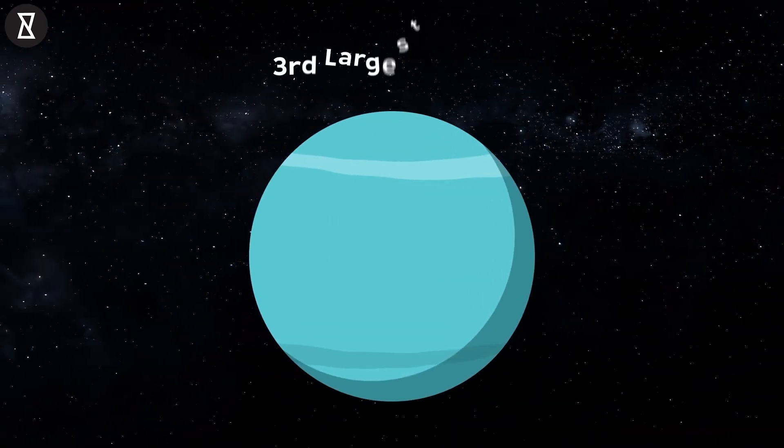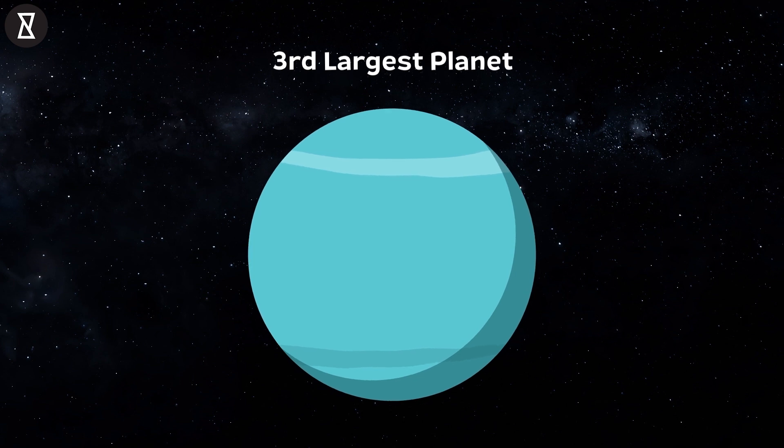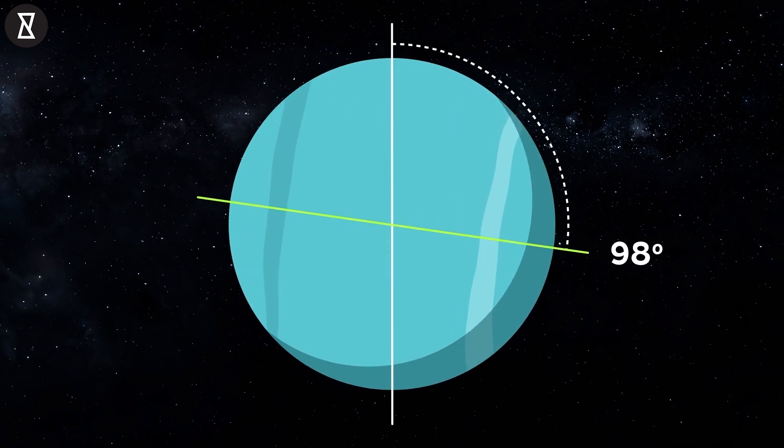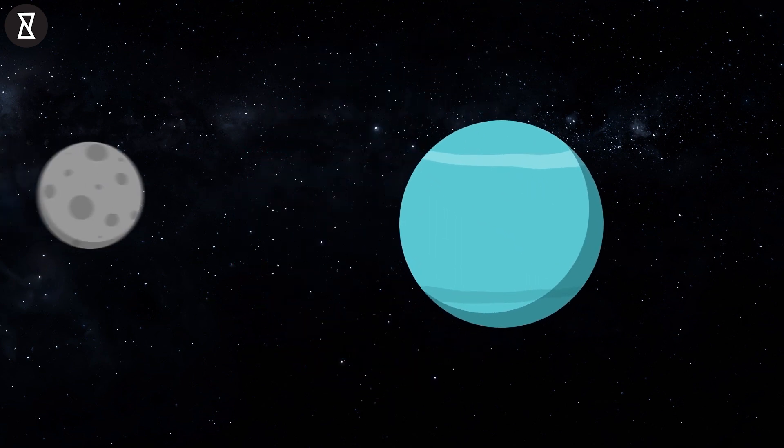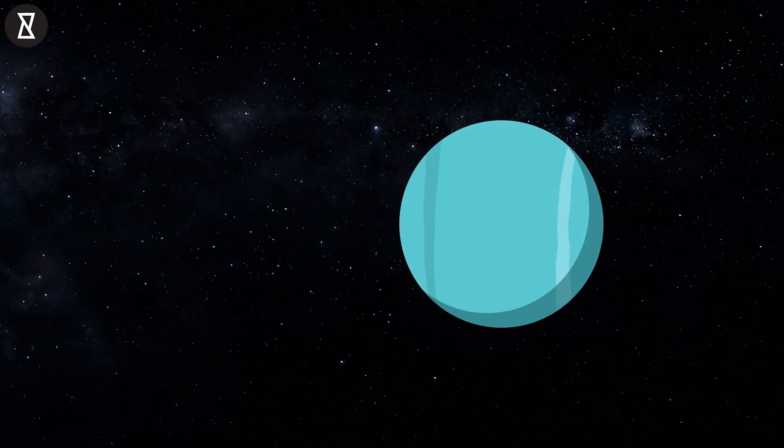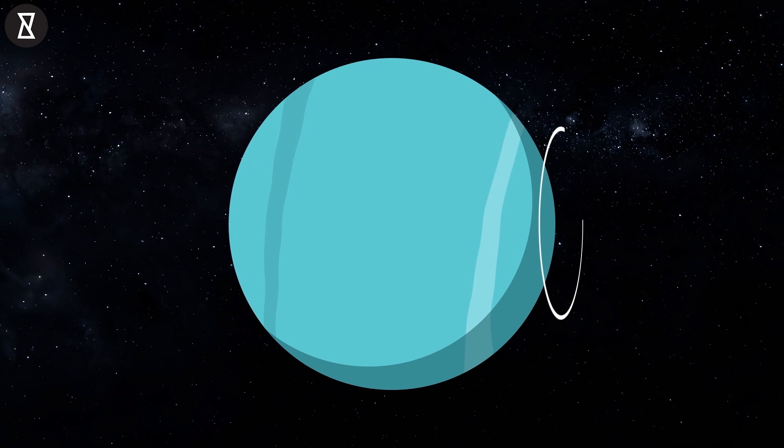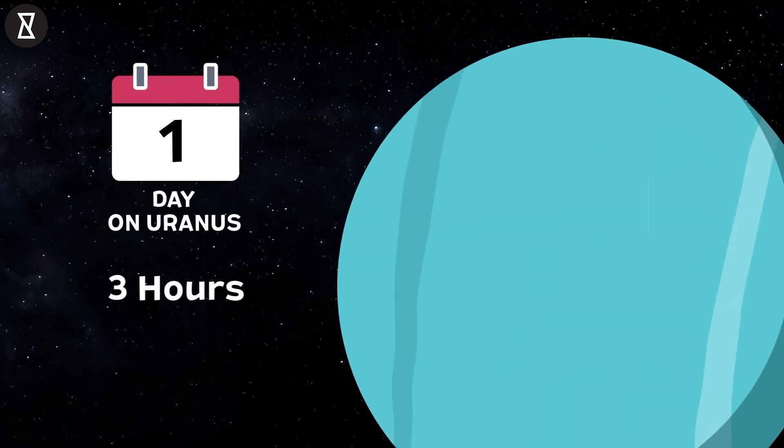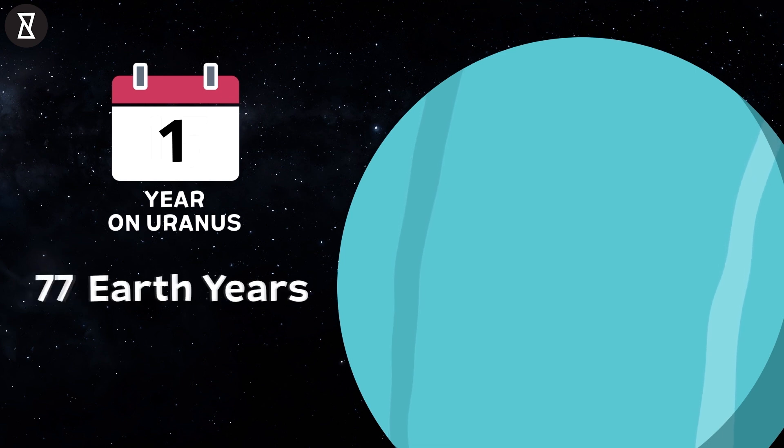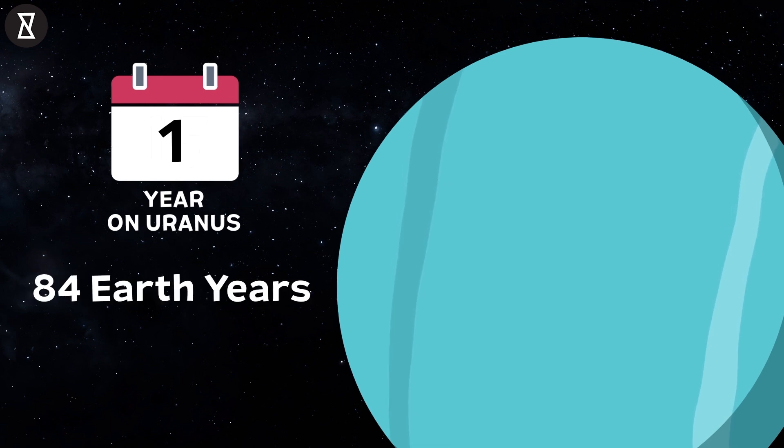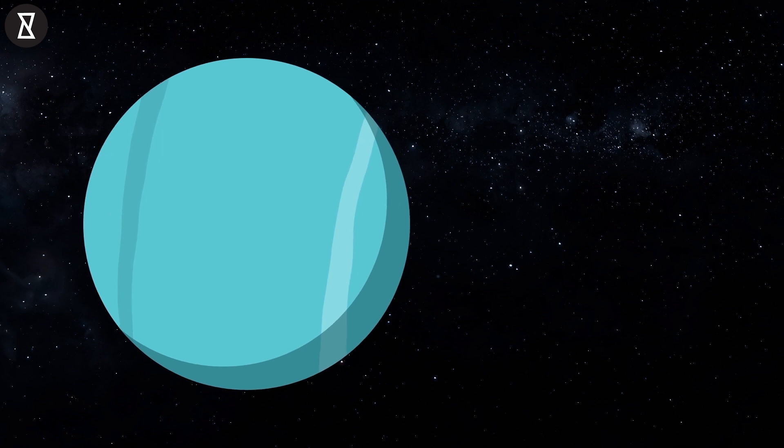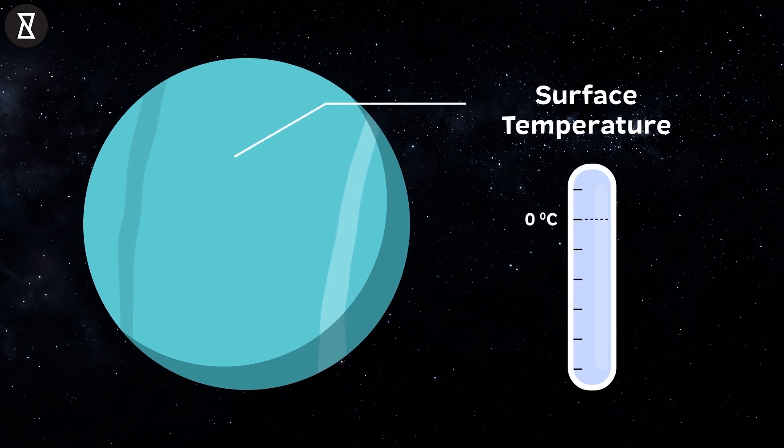Uranus. Uranus is the third largest planet in the solar system. It has a unique tilt. This is because it collided with an Earth-sized planet immediately after its formation. Uranus also rotates in the opposite direction. While one Uranus day is 17 Earth hours, one Uranus year is equal to 84 Earth years. It is one of the coldest planets in the solar system, with a surface temperature of minus 224 degrees Celsius.